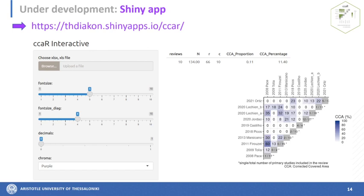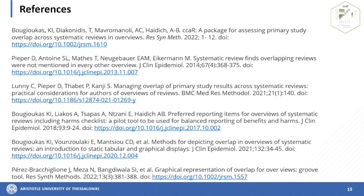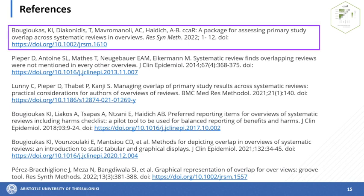A Shiny app is under development for users unfamiliar with a command line environment. More details about the package can be found in the recently published paper titled 'CCAR: a package for assessing primary study overlap across systematic reviews in overviews.' Thank you very much for your attention.